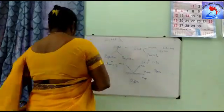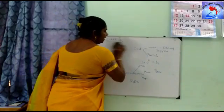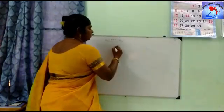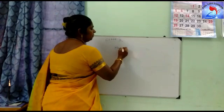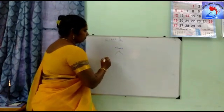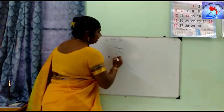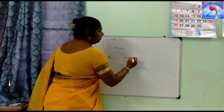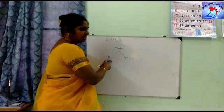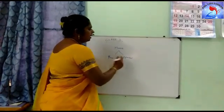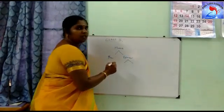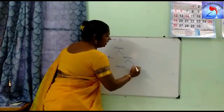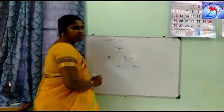Coming to reflection, we will be studying about mirrors. There are two types of mirrors: one is the plane mirror and the other one is the spherical mirror. There are two types of spherical mirrors — one is the concave spherical mirror and the other one is the convex spherical mirror.